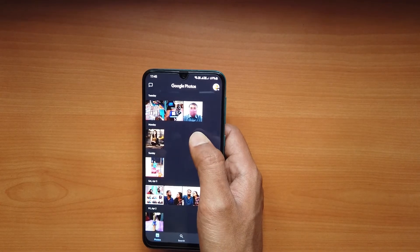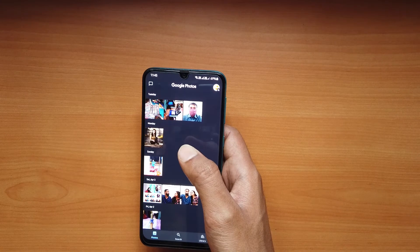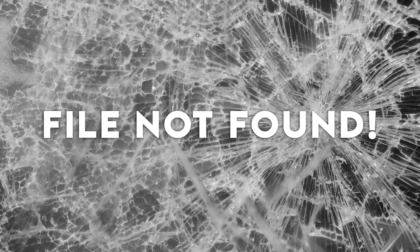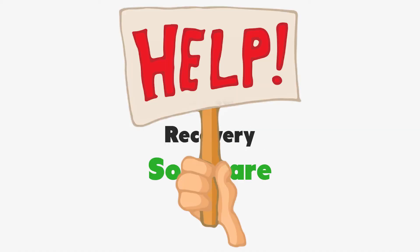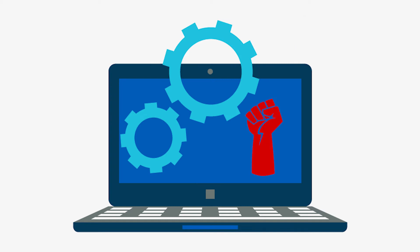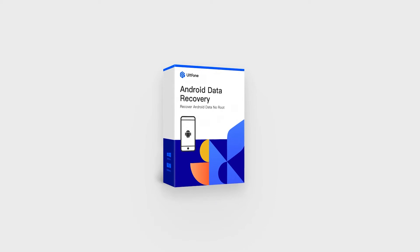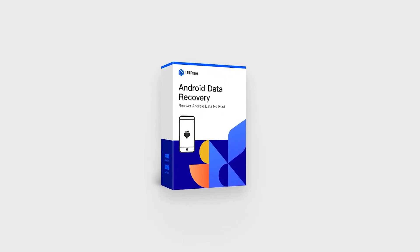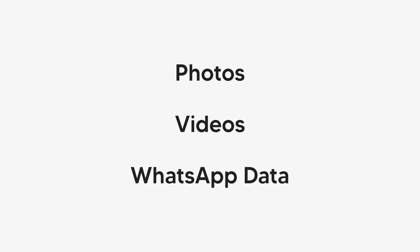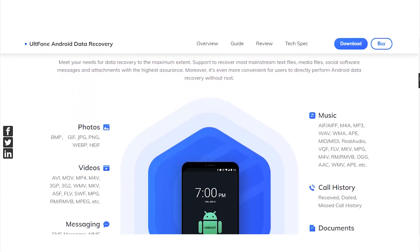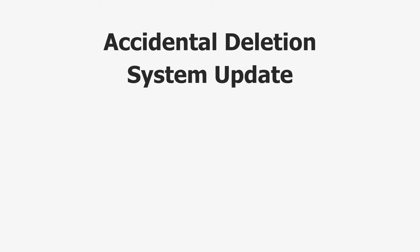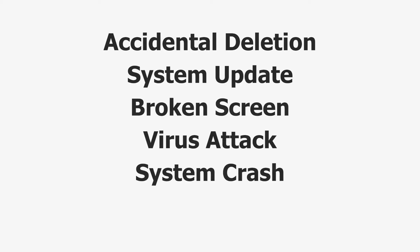The photos or videos will be restored back to their original album. You can view them in your phone's gallery app or Google Photos library. If you had no backup and didn't use Google Photos to manage your photos and videos on Android, your last option is to use a reliable Android data recovery software. A powerful program that can do exactly this is the UltFone Android data recovery tool, which can recover deleted photos, videos, and WhatsApp data without root. With this all-in-one tool, you can easily recover lost Android data due to accidental deletion, system update, broken screen, virus attack, system crash, and more.